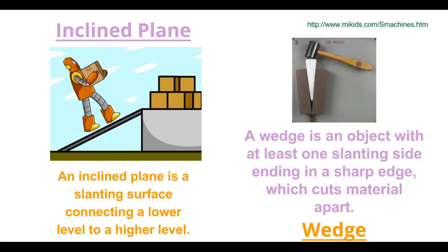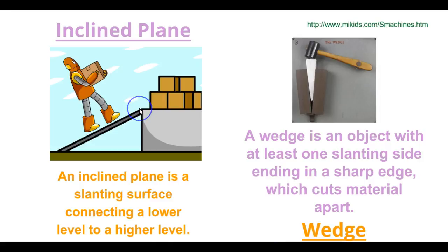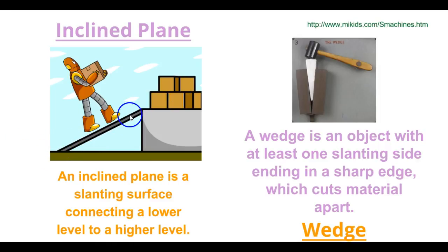All right, so let's talk about both. An inclined plane is a slanting surface connecting a lower level to a higher level. As you can see here, the bottom of the inclined plane is on the ground and then it goes up and it's connected to a higher level. So instead of the robot having to step up or use stairs, the robot is able to just walk up the inclined plane and put the boxes down on the higher level.